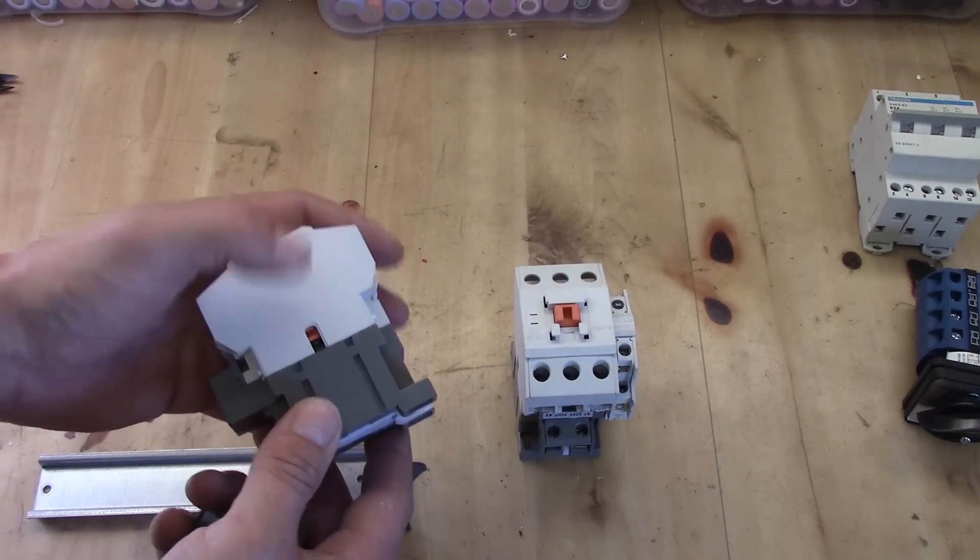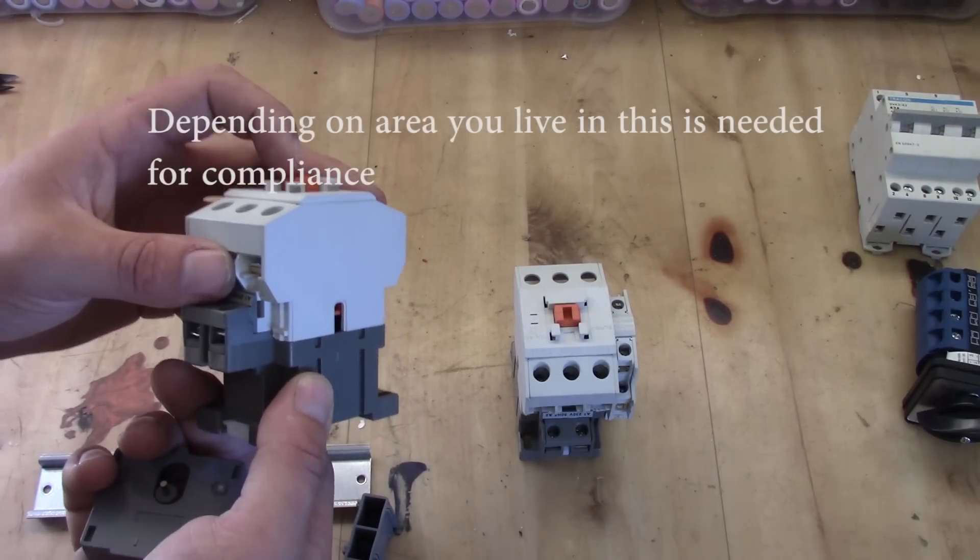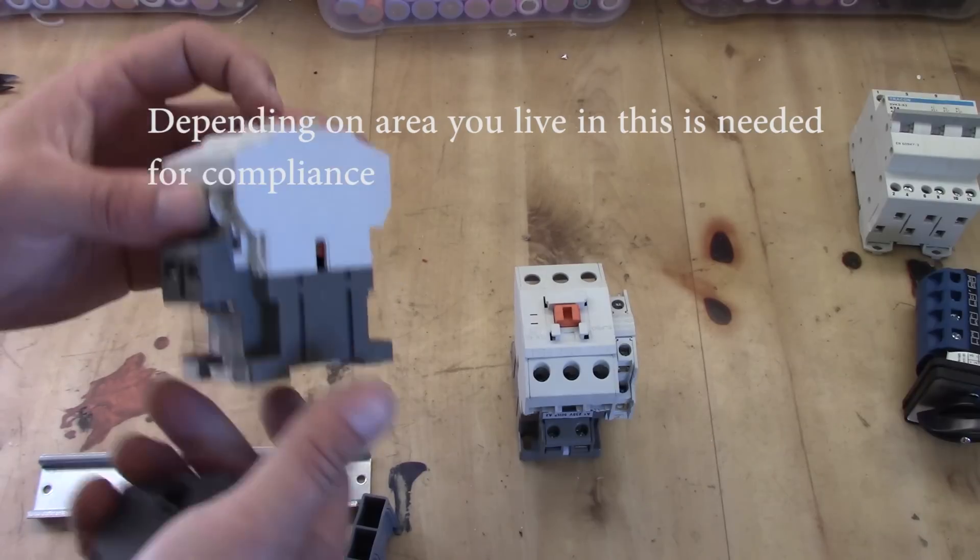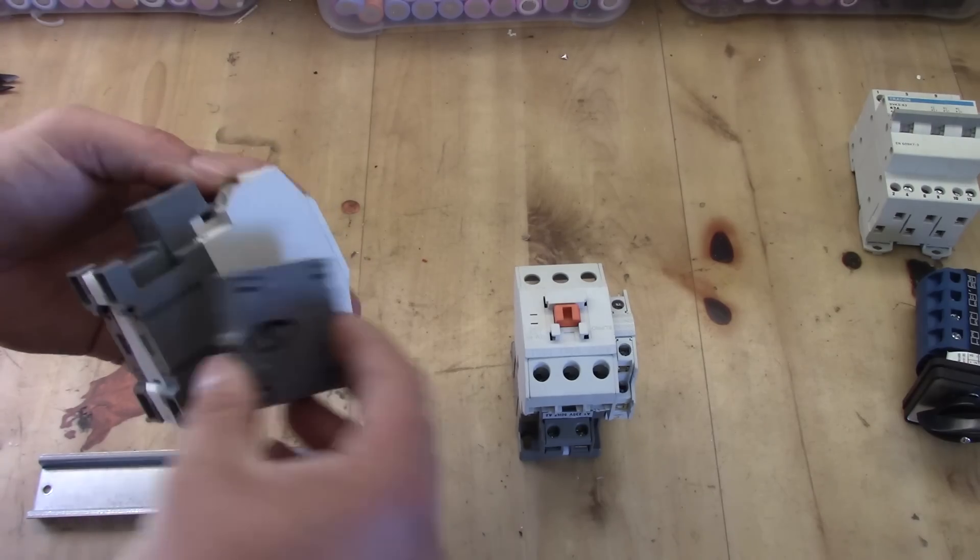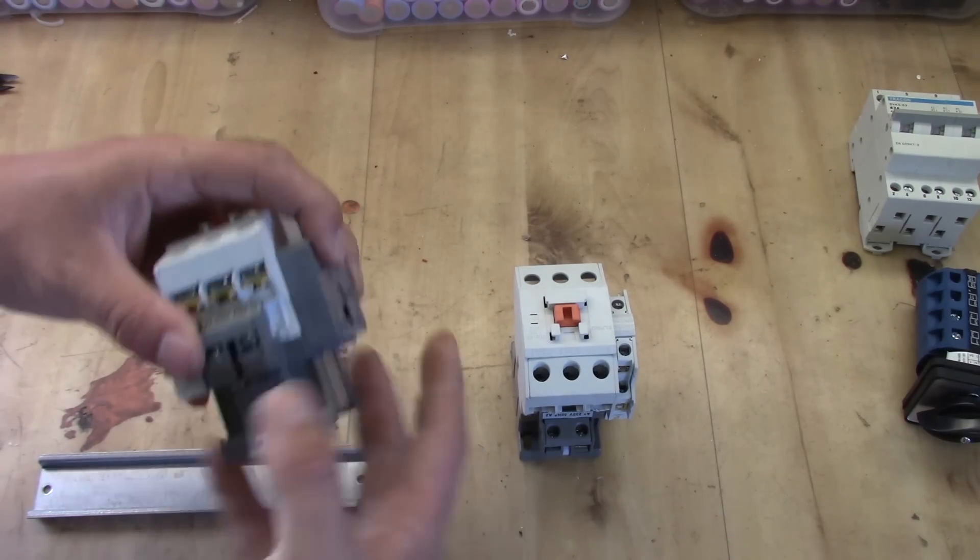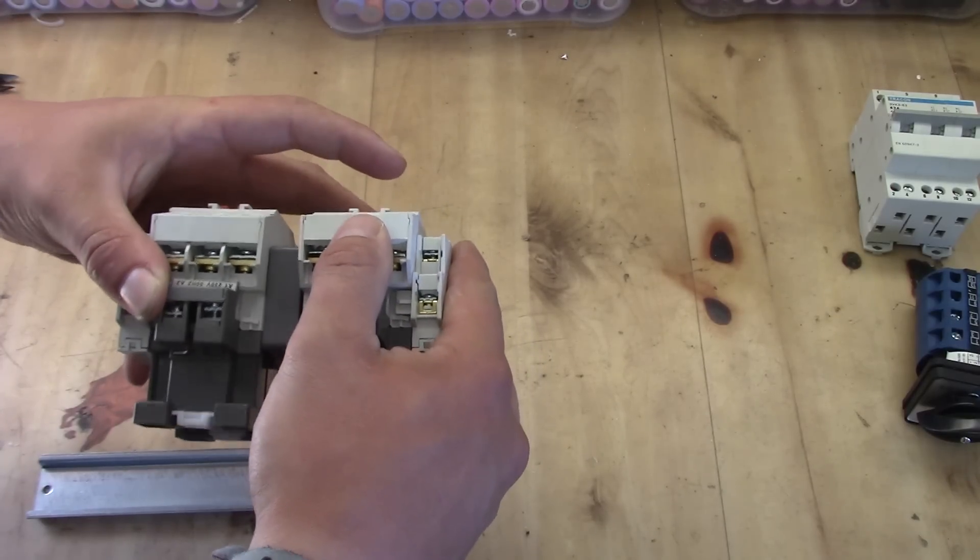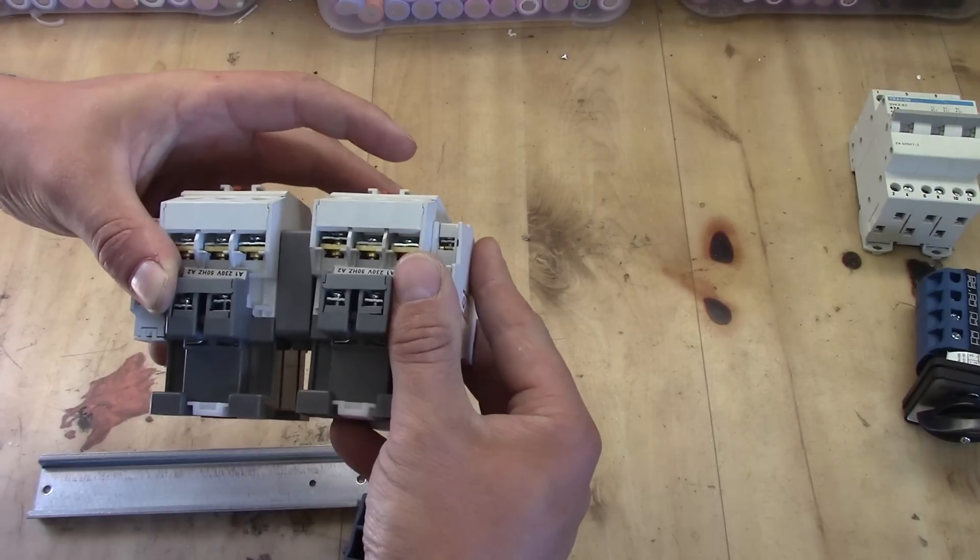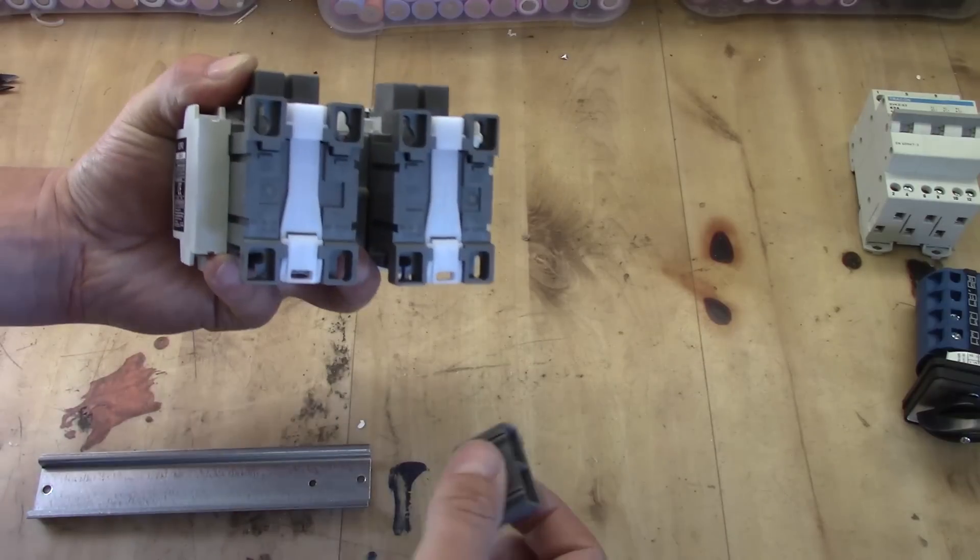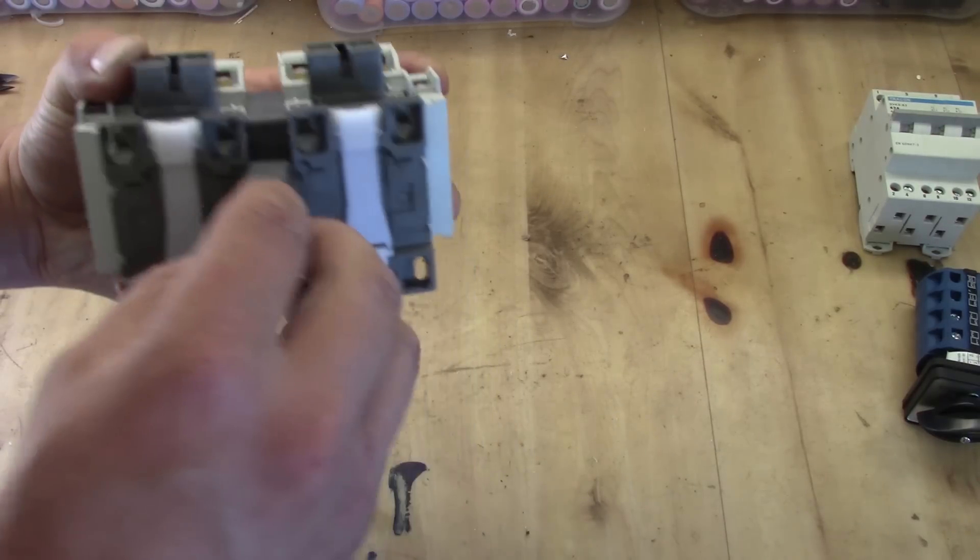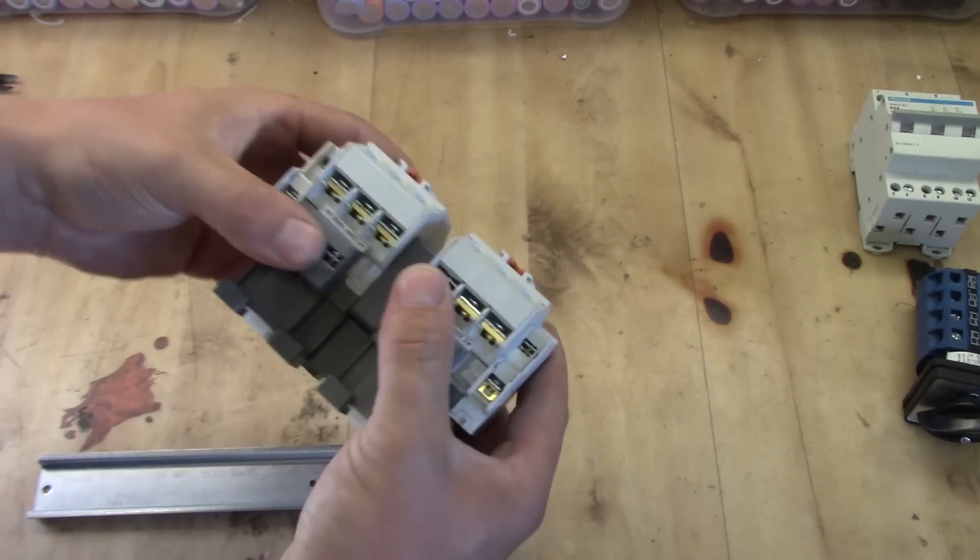The contactors have something that is called a mechanical interlocking, and that means if one is connected, the other one cannot be connected due to this blocking device here. So, let's hook them up. It should go in like that, and we take another one and do the same thing, and we will make sure that they align in the dents, like that. You keep them together, you take this plastic piece, and that one should fit in between and hold them together. So now they are one.